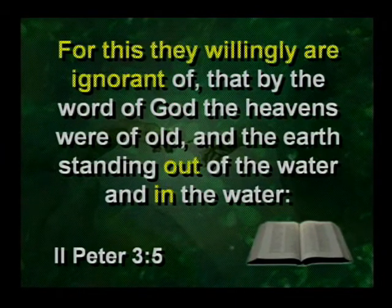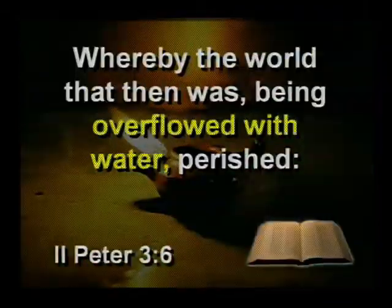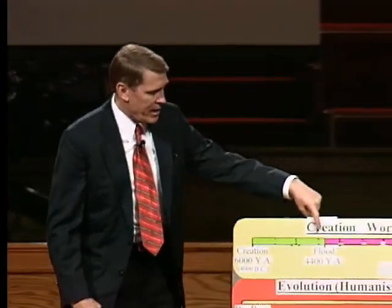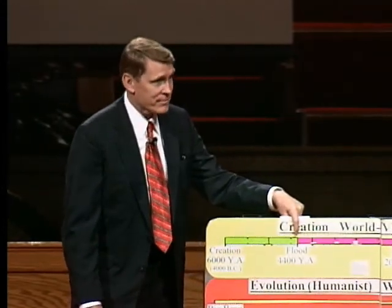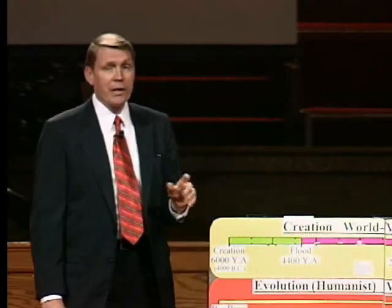The scoffers are willingly ignorant — in the Greek, that means dumb on purpose. They are willingly ignorant of how God made the heavens — notice 'heaven' is plural — and how the earth was standing in the water and out of the water. The scoffers are ignorant of the creation and ignorant of the flood. The world was overflowed with water and perished. The two things the scoffers are ignorant of are the creation about 6,000 years ago and the flood about 4,400 years ago. They don't want to admit God created the world, because that would mean He owns it and makes the rules, and they don't want to admit there was a flood, because that means He has the authority to judge His creation.